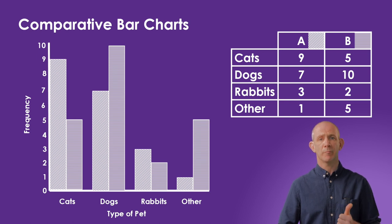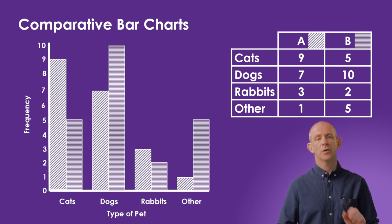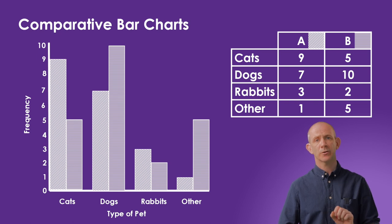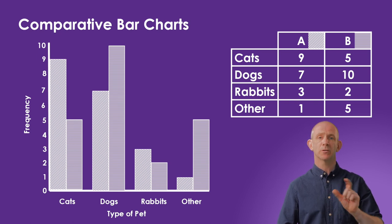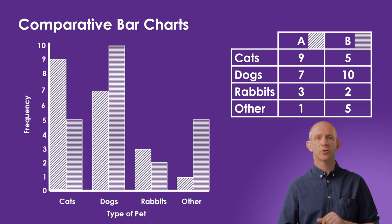As you can see, plotting bar charts is quite simple. Just remember the scale, labels, and to draw accurate bars to gain full marks. For a comparative bar chart comparing two sets of data, you'll need a key to differentiate the bars.